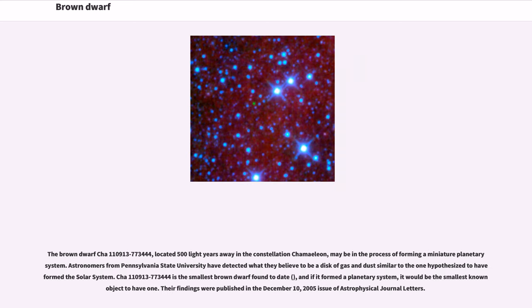The brown dwarf Cha 110913-773444, located 500 light years away in the constellation Chamaeleon, may be in the process of forming a miniature planetary system. Astronomers from Pennsylvania State University have detected what they believe to be a disk of gas and dust similar to the one hypothesized to have formed the solar system. Cha 110913-773444 is the smallest brown dwarf found to date, and if it formed a planetary system, it would be the smallest known object to have one. Their findings were published in the December 10, 2005 issue of Astrophysical Journal Letters.